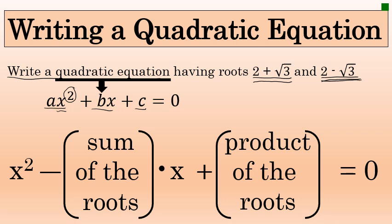All quadratics have the form x squared minus the sum of the two roots times x plus the product of those same two roots when equal to 0. Let's apply this property with the two roots given in this problem: 2 plus the square root of 3 and 2 minus the square root of 3.